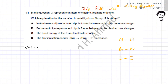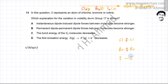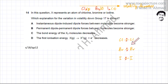The attractive forces in iodine are the greatest and in chlorine the weakest. Looking at Cl₂, it's a completely non-polar molecule because both chlorines are equally electronegative, so shared electrons are evenly distributed. Similarly, Br₂ and I₂ have no dipoles. There are no permanent dipoles, so the only force of attraction between molecules is van der Waals forces.